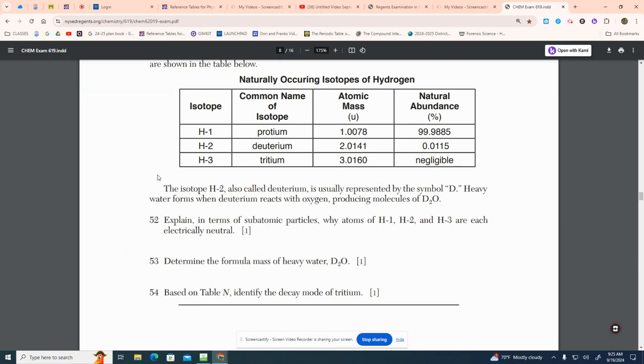So in this question on this regents that I found before by total accident, we were just poking around. It has a column. It says isotope H-1, H-2, and H-3. What does the 1, the 2, and the 3 refer to? The what number? The mass number. Excellent. That number is the mass number.